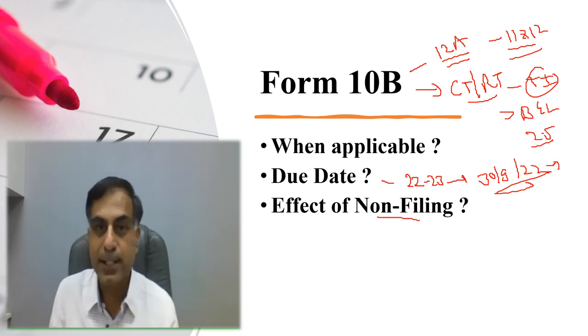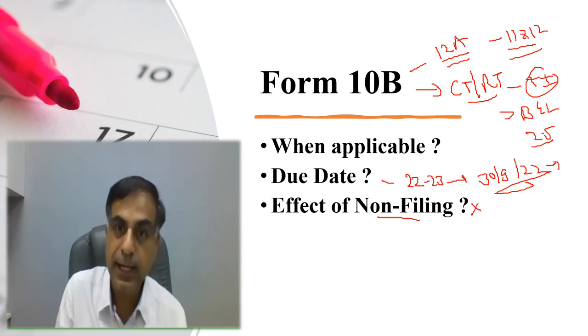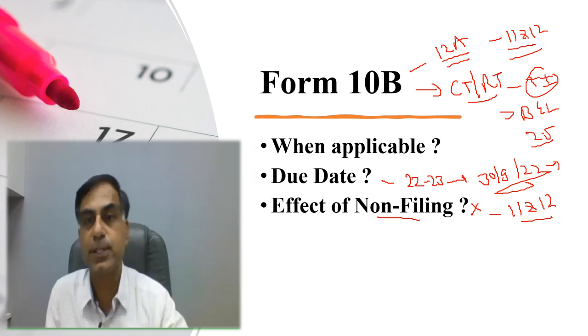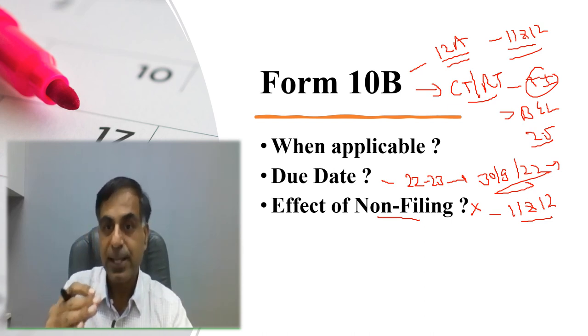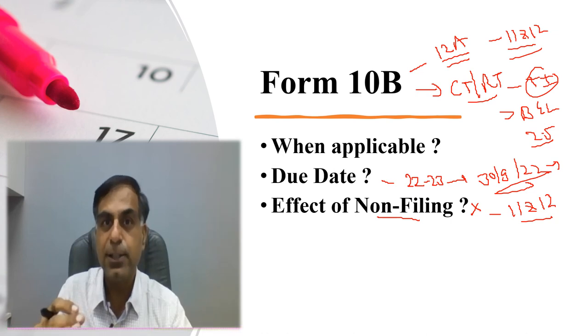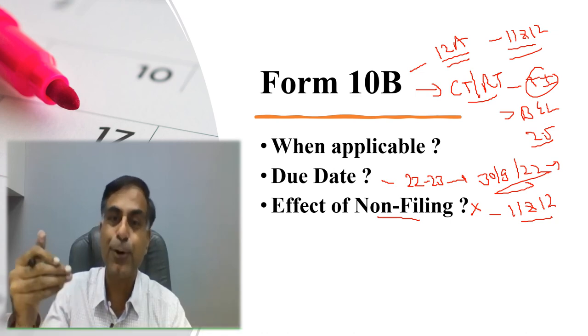Now what will be the effect of non-filing? That is very dangerous. If it is not filed and it is applicable, then for the relevant assessment year, your exemption of section 11 and 12 has gone. So no trust, charitable or religious, should indulge into a mistake of not filing form 10B at all.